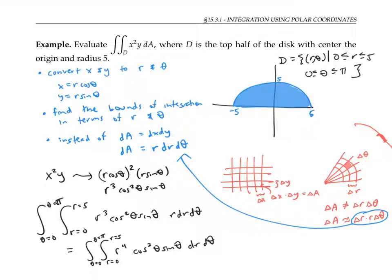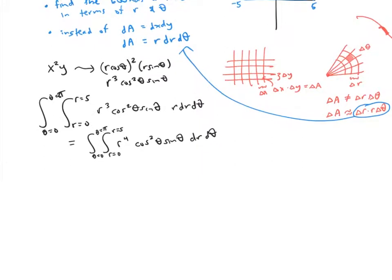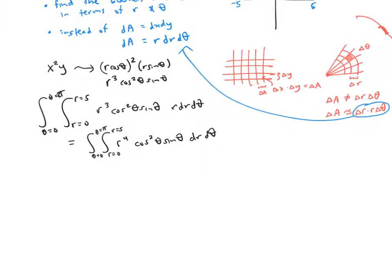We need to integrate with respect to r first, that's our inner integral. But since cosine squared theta sine theta is a constant with respect to r, we can pull that constant multiple outside this integral sign. Furthermore, this whole integral here, once I compute it, will just be a number. So I can pull this constant multiple out of this integral sign.